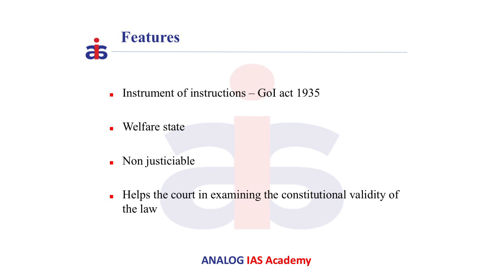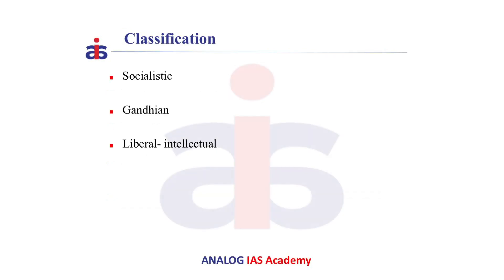But they help the courts in examining and determining the constitutional validity of a law. The Directive Principles of State Policy are broadly classified into three categories: socialistic, Gandhian, and liberal intellectual.